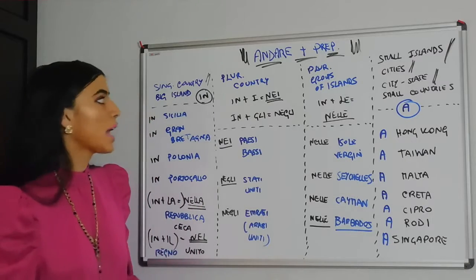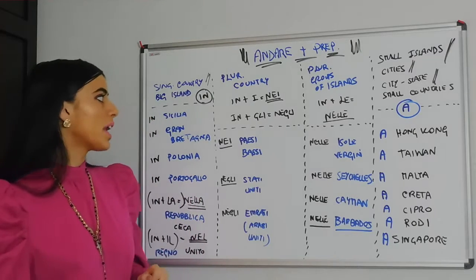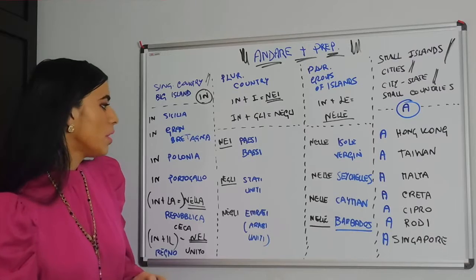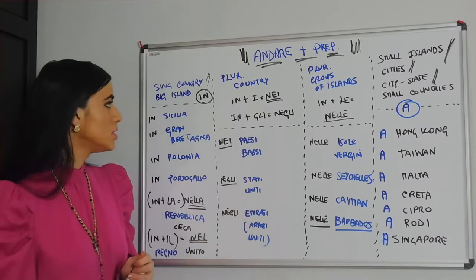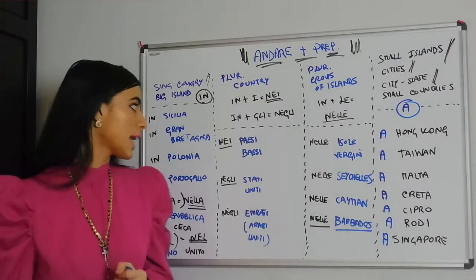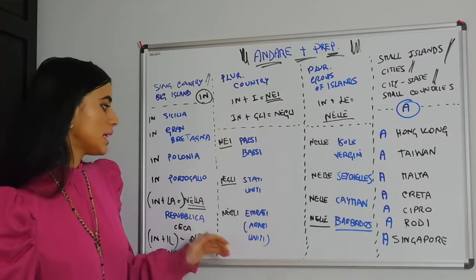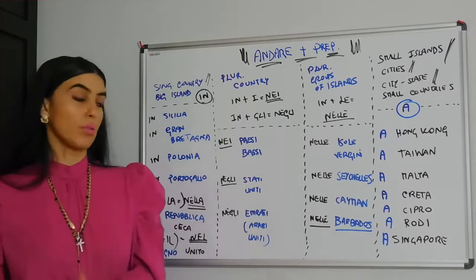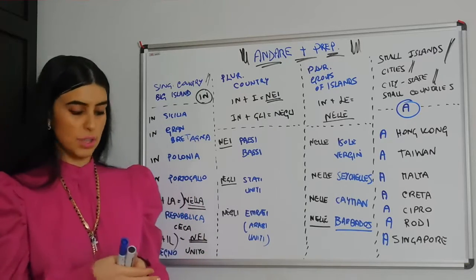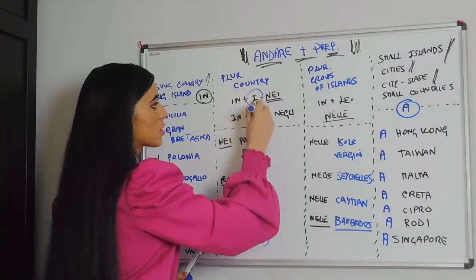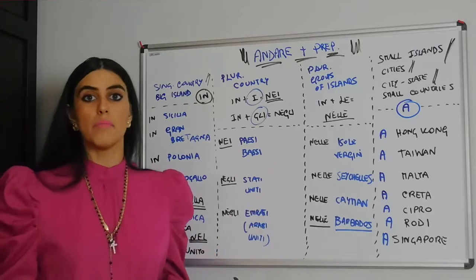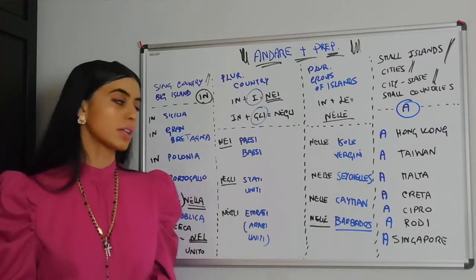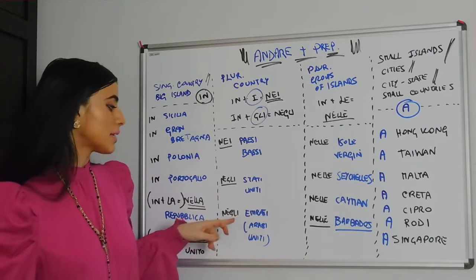Plural countries. For plural countries, we use in plus i, which becomes nei, or in plus gli, which becomes negli. This is the easiest column, because basically we only have three plural countries in the world: nei Paesi Bassi, negli Stati Uniti, negli Emirati. Plural countries are always masculine, which is why we use the articles i and gli, and therefore nei or negli.